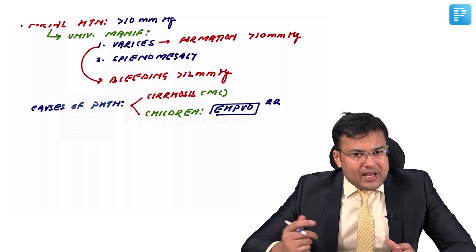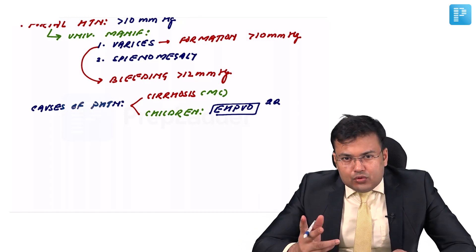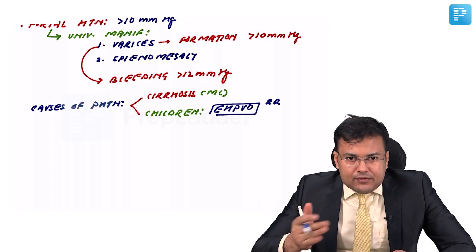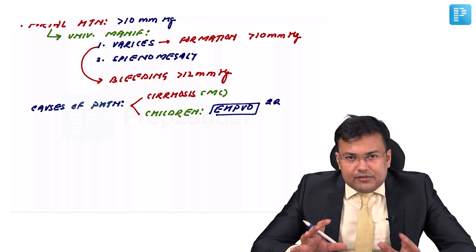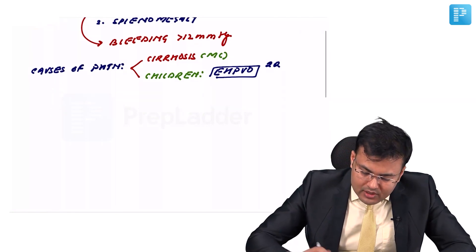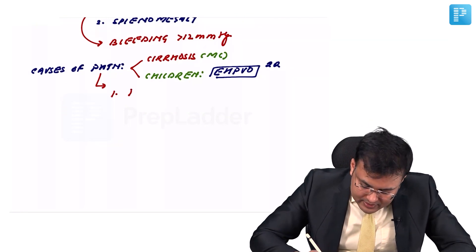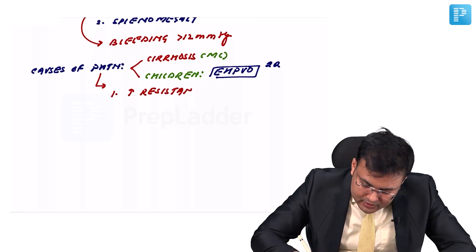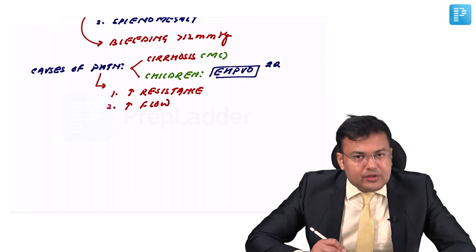What is the cause of hypertension? Increased pressure results from either increased flow in the vessel or increased resistance. In portal hypertension due to cirrhosis, there is increased resistance.